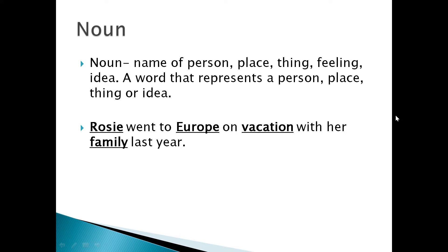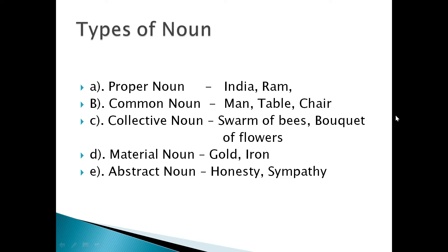In this sentence, the nouns are: 'Rosie' — the name of a person; 'Europe' — the name of a place; 'vacation' — the name given to a trip; 'family' — the name given to a group including mother, father, daughters, brothers, sisters; and 'year' — a period of time. Now let me briefly cover the types of noun.